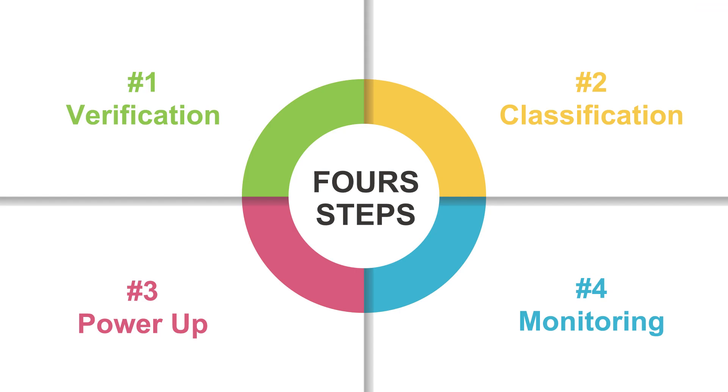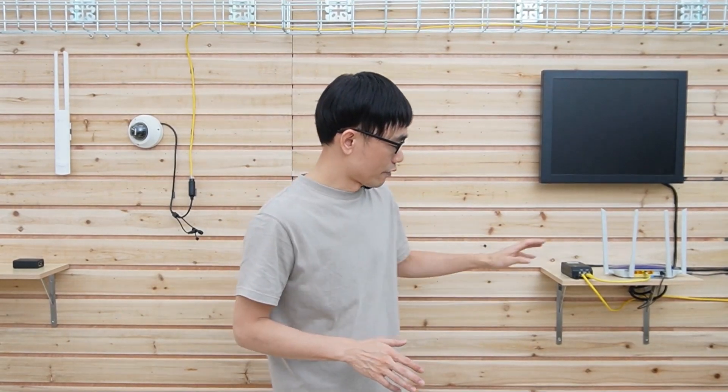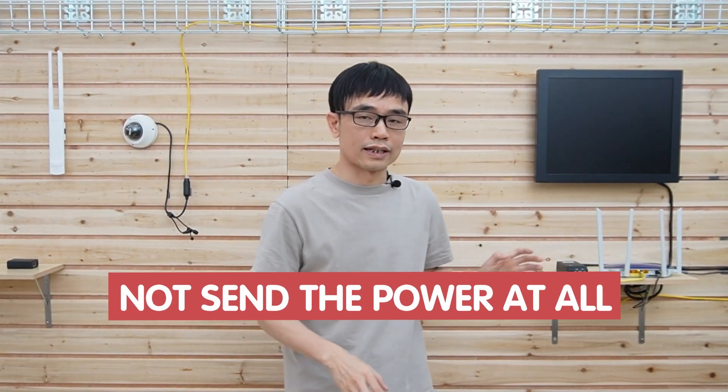Before the PoE injector releases the power to this Cat5 or Cat6 Ethernet cable, you need to classify and verify your edge device. If you detect your edge device doesn't support PoE, you will not send the power at all.